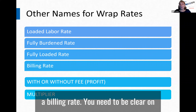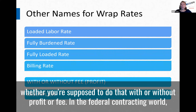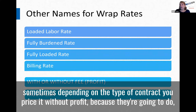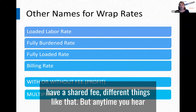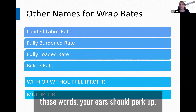You need to be clear on whether you're supposed to price that with or without profit or fee. In the federal contracting world, sometimes depending on the type of contract, you price it without profit because they're going to treat the profit a different way — have a shared fee, different things like that. But anytime you hear these words, your ears should perk up.